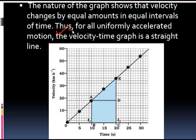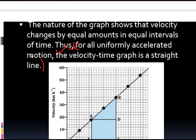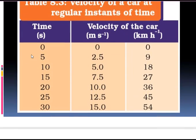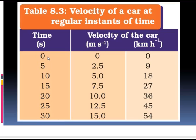This is very important — you should keep this point in mind. For all uniformly accelerated motion, the velocity-time graph is a straight line. When the time interval is 5, the velocity interval is 2.5 — this is consistent throughout. So for a particular interval of time, the change in velocity is the same. This type of motion is called uniformly accelerated motion.